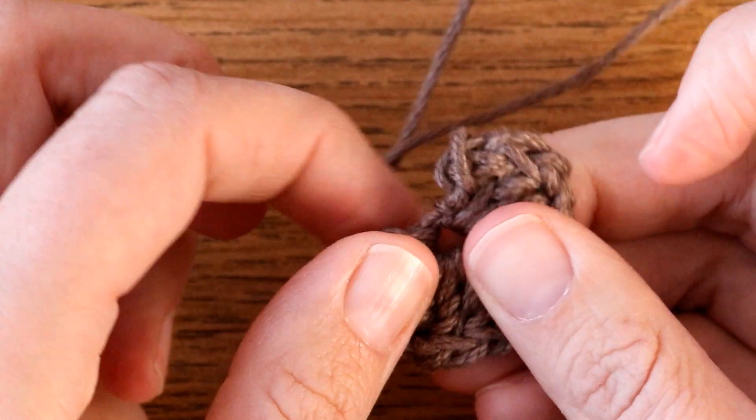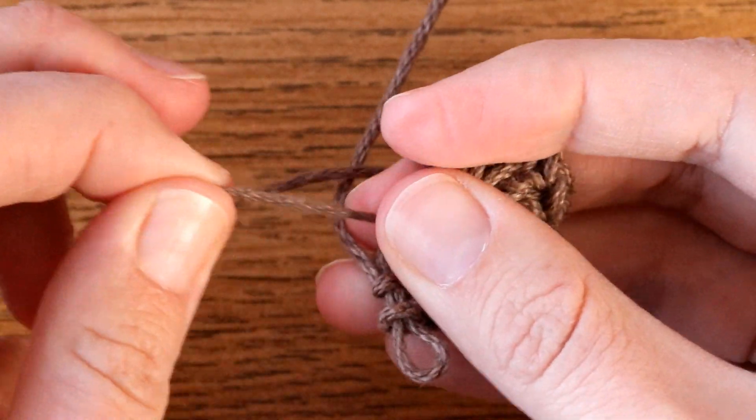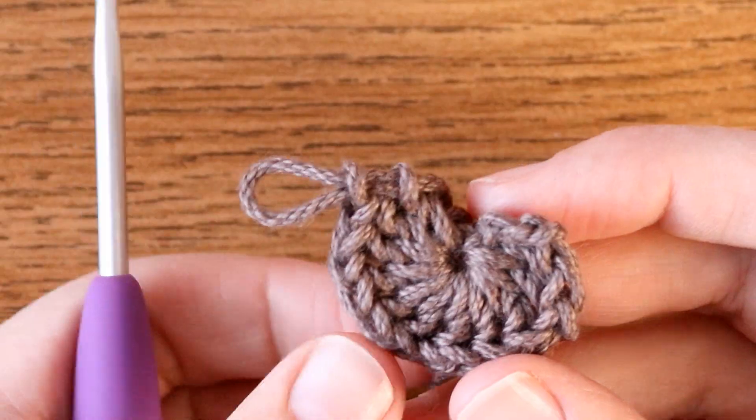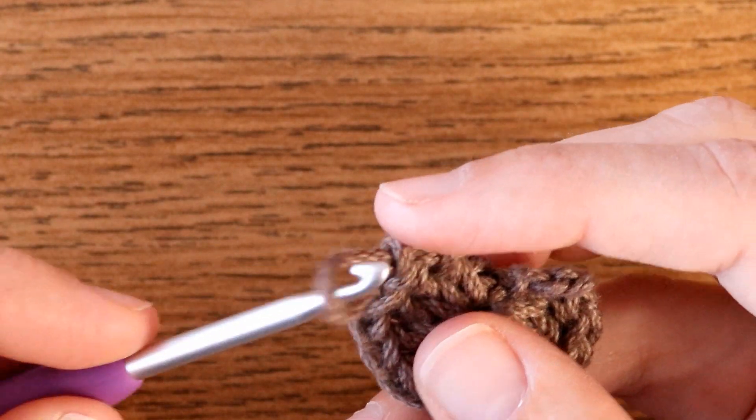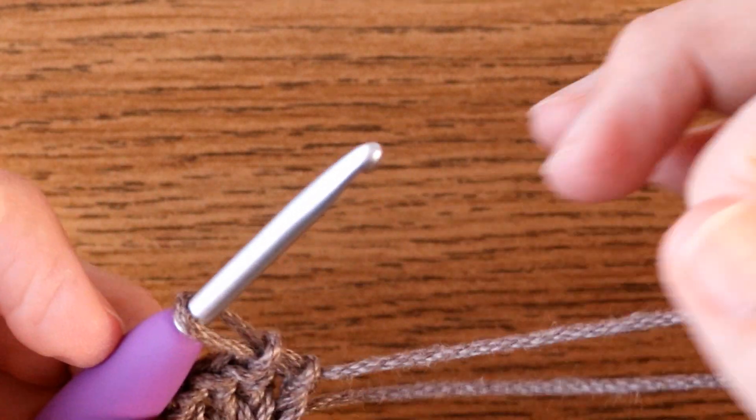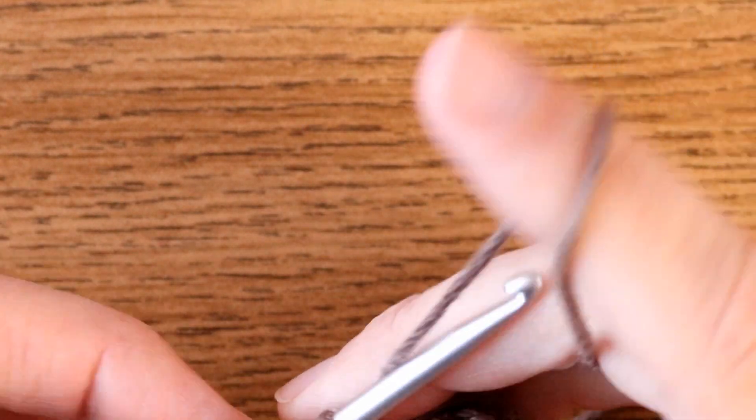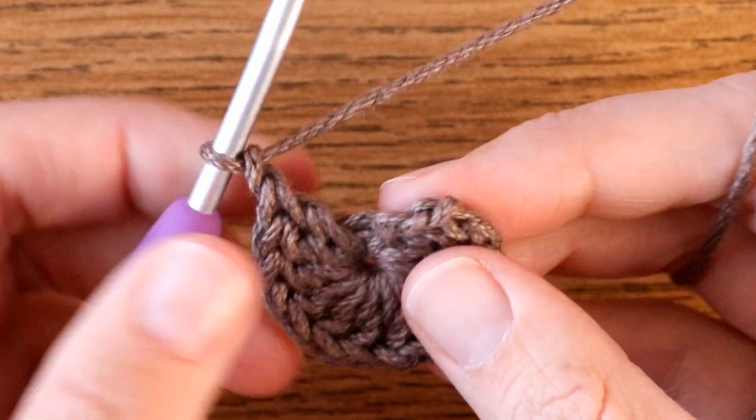Now if I pull on that tail nice and tight the hole vanishes completely. From here I can now reinsert my hook into my project, tighten it up a little bit, and finish off this little row.